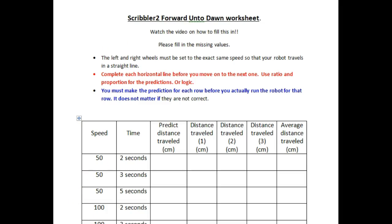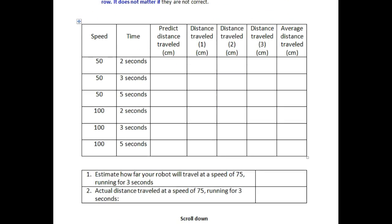Now that you can program your robot to move forward, you are ready to complete the Forward Unto Dawn worksheet. You must set your left and right wheels to the exact same speed so that your robot travels in a straight line. For the first three rows, your robot is going to be moving at a speed of 50, and for the next three rows, your robot will be moving at a speed of 100.